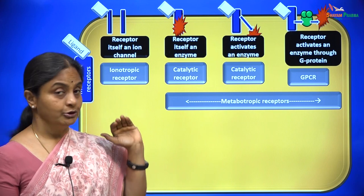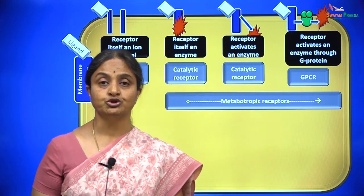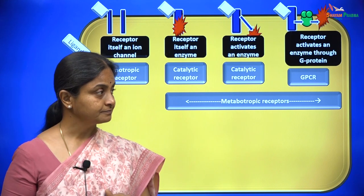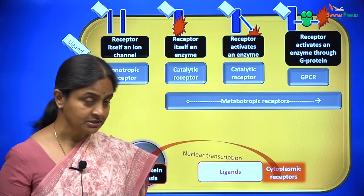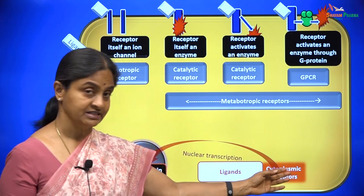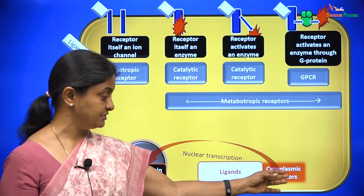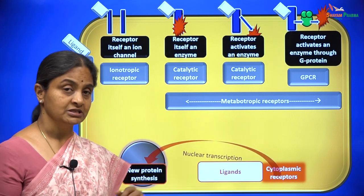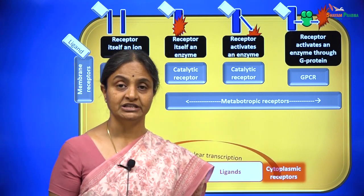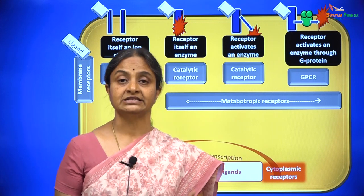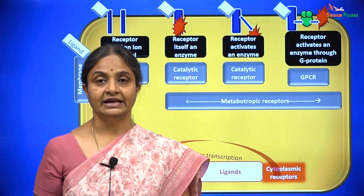As against ionotropic receptors, the catalytic receptors and GPCRs are referred to as metabotropic receptors. In addition to these, we have cytoplasmic receptors where, when a ligand binds, it induces nuclear transcription, synthesis of new proteins, and the newly synthesized proteins bring about the action of the ligand.